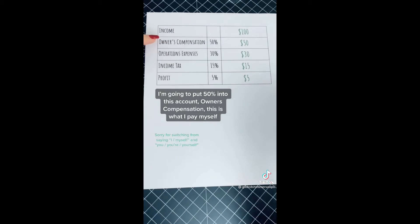So let's say I have $100. I'm going to put 50% of that into this account, owner's compensation. This is what I pay myself.